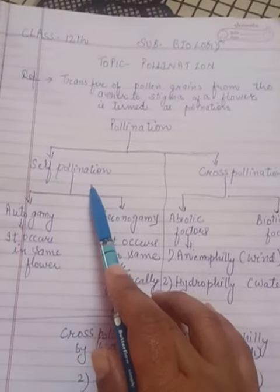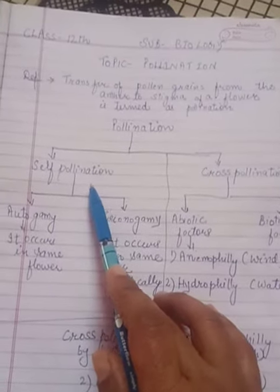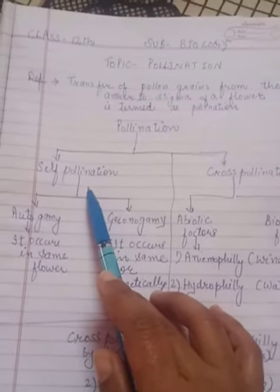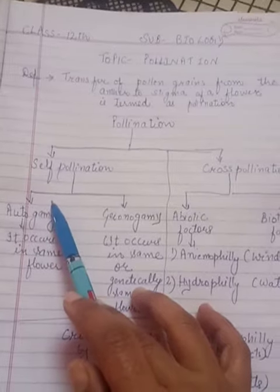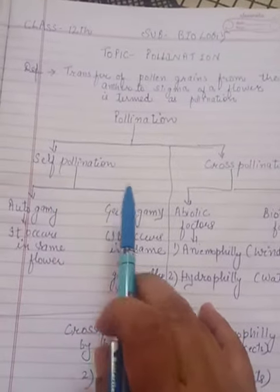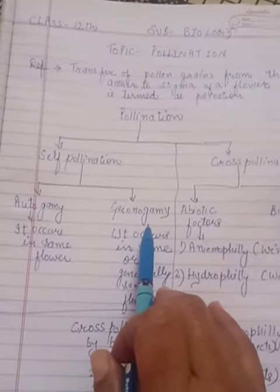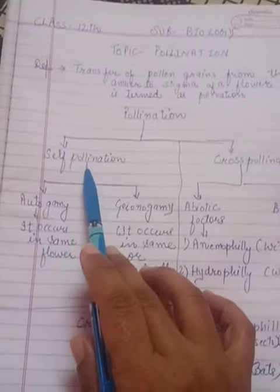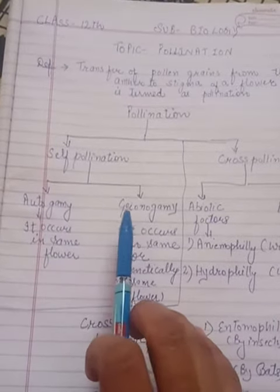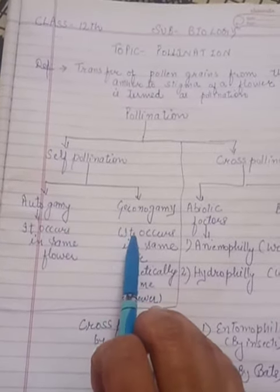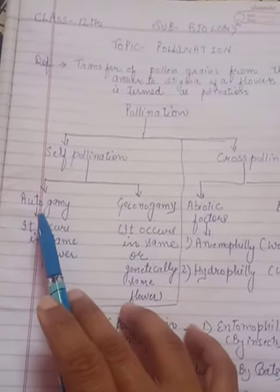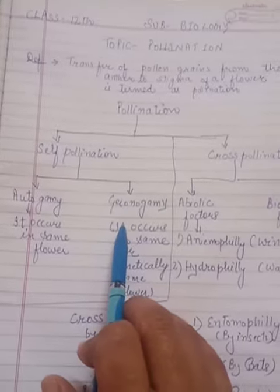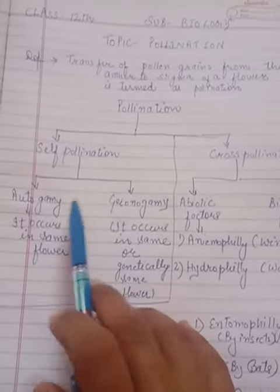What is self-pollination? Transfer of pollen grain within the same flower or genetically same flowers. Self-pollination is again of two types: one is autogamy and another is geitonogamy.